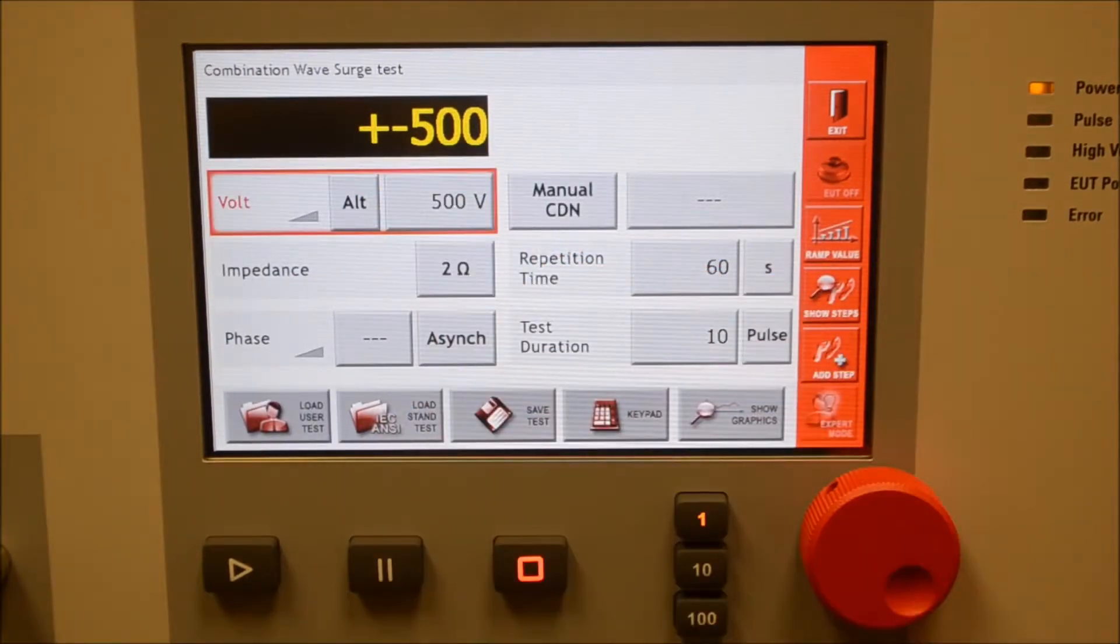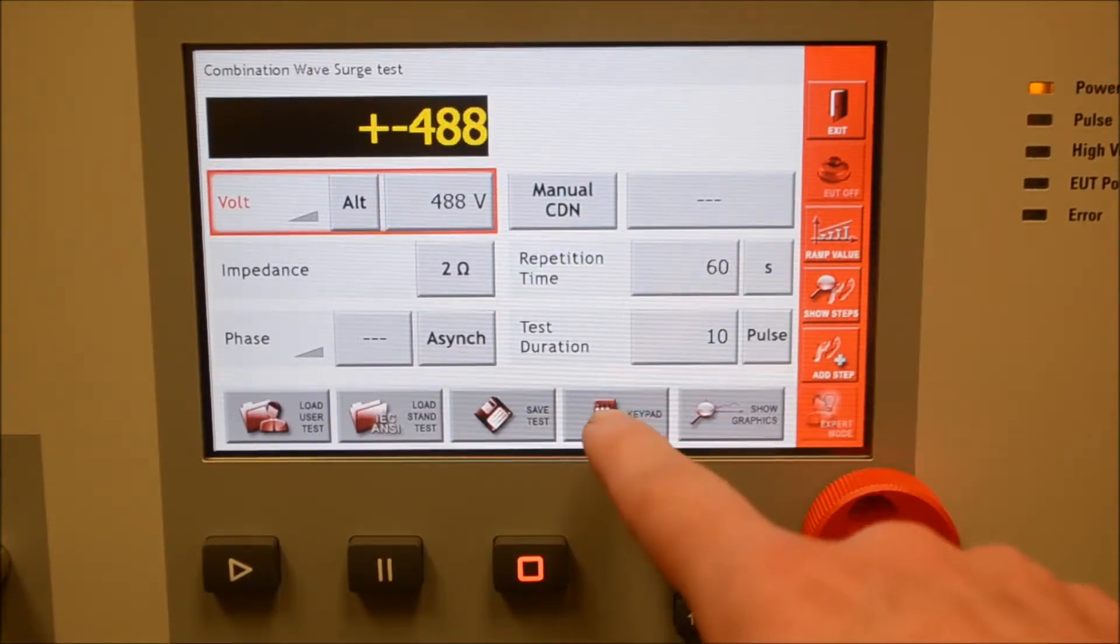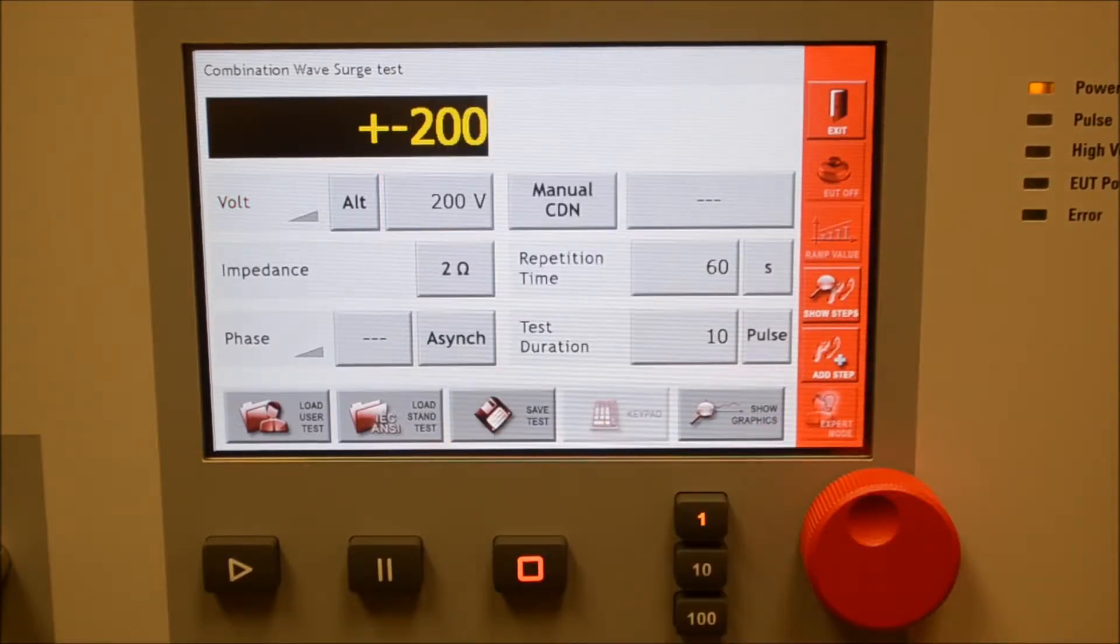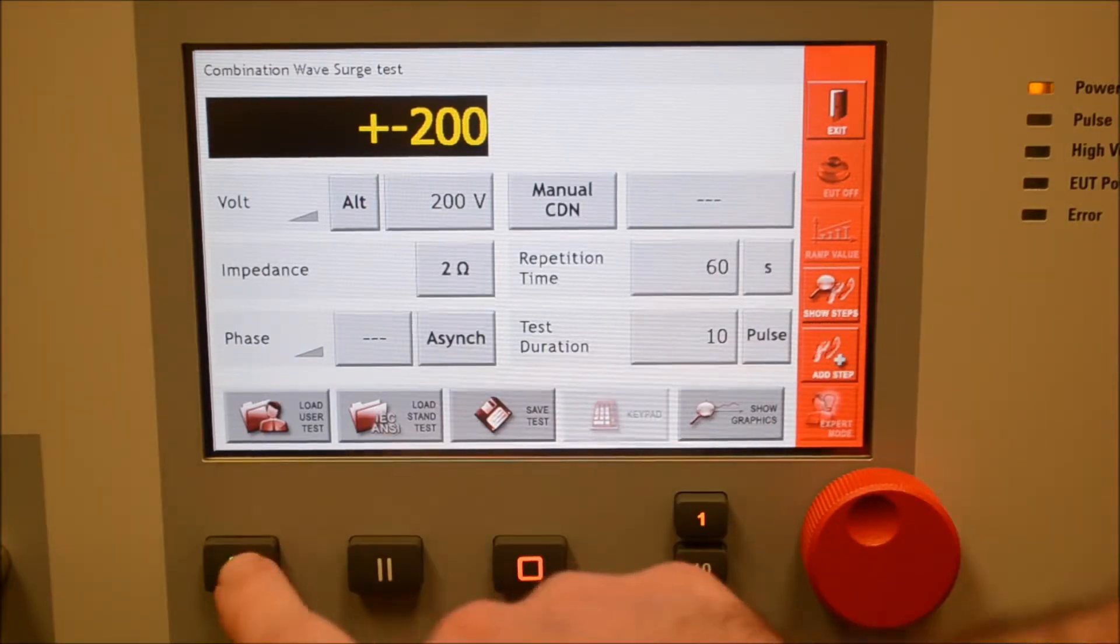To adjust any of the values on the screen, you can use the wheel or the keypad. Product standards like EN55024 will define rep time, duration, and phase that you can program easily enough and slam on the play button.